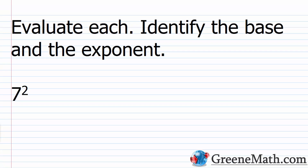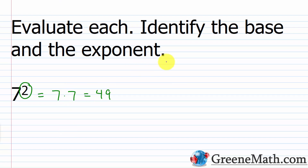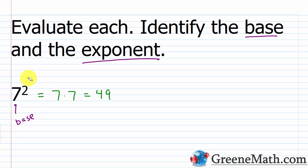Now we're going to evaluate each expression and identify the base and the exponent. We have 7 to the 2nd power — if something is raised to the 2nd power we say it's squared, so we'd say 7 squared. To evaluate this I write it as a repeated multiplication: this 2 tells me I have two factors of 7, so 7 times 7. And 7 times 7 is 49. The base is 7 and the exponent is 2.